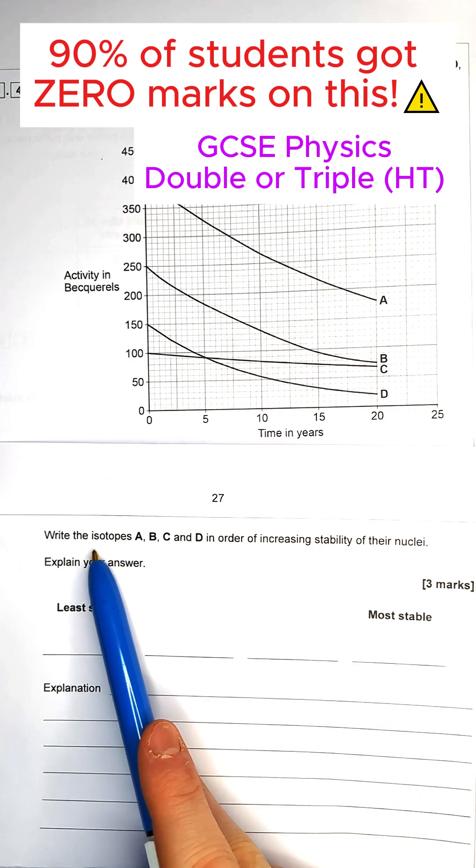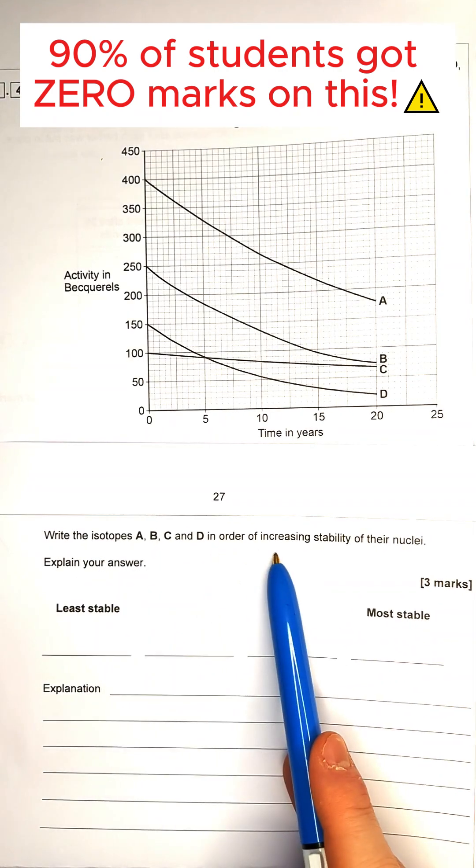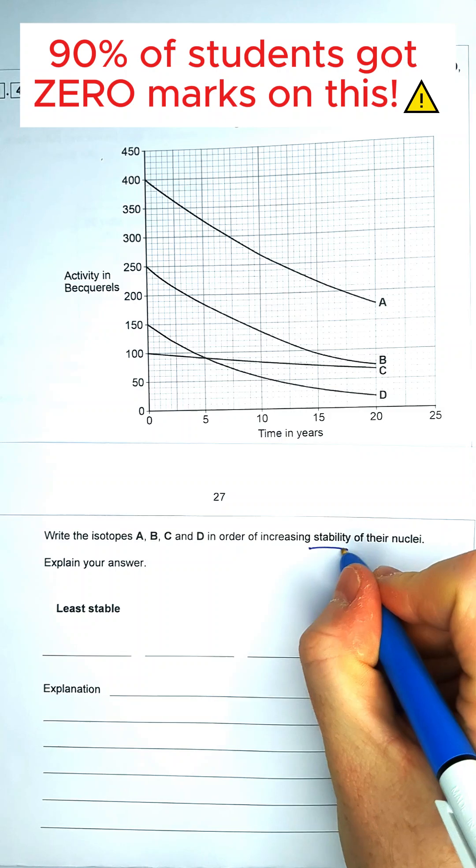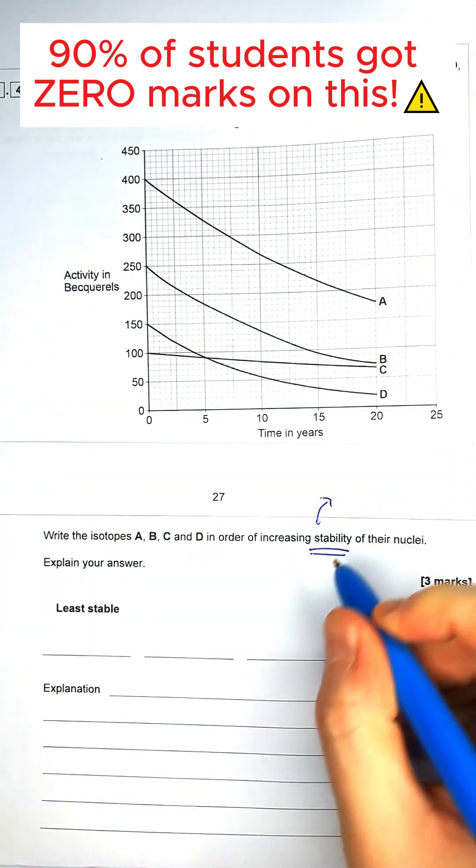And the question says, write the isotopes A, B, C, and D in order of increasing stability of their nuclei. To be able to understand this question, you really need to understand what radioactivity is.